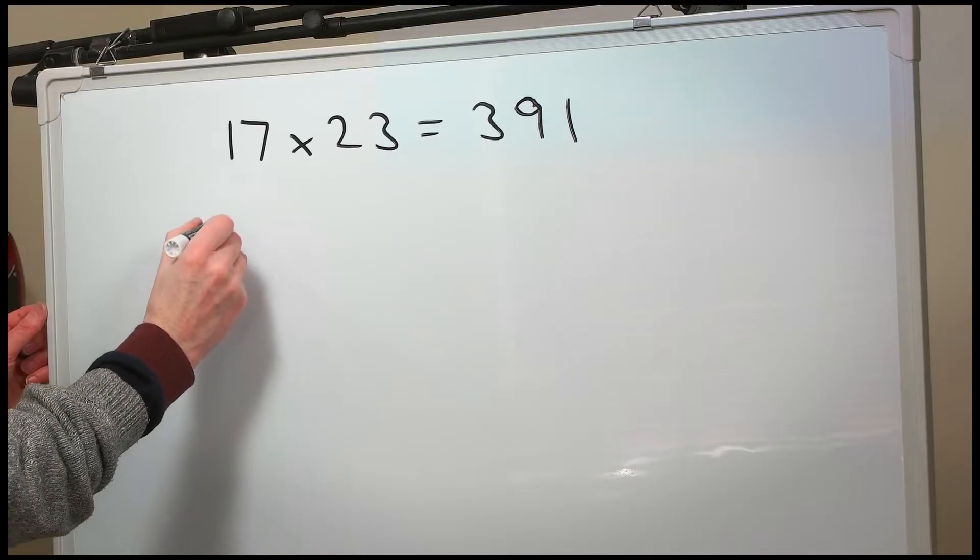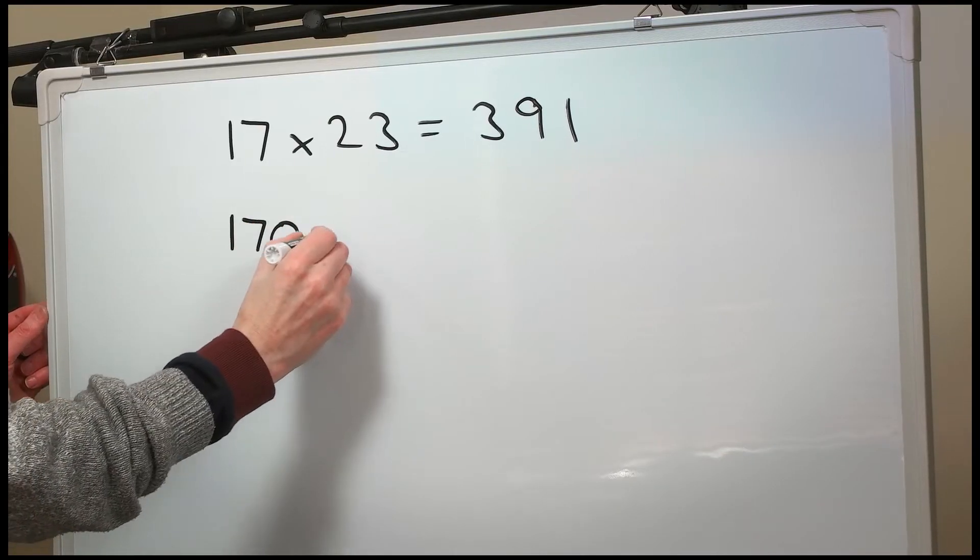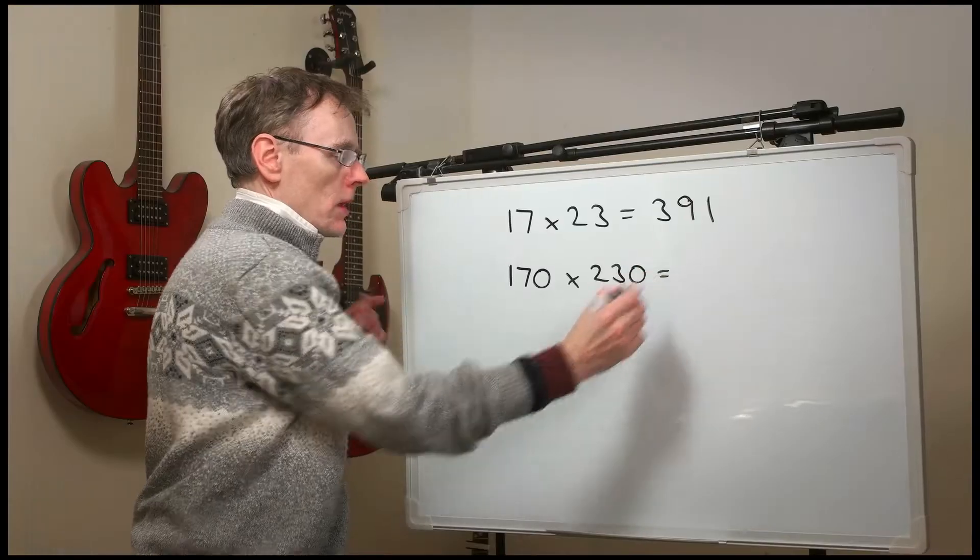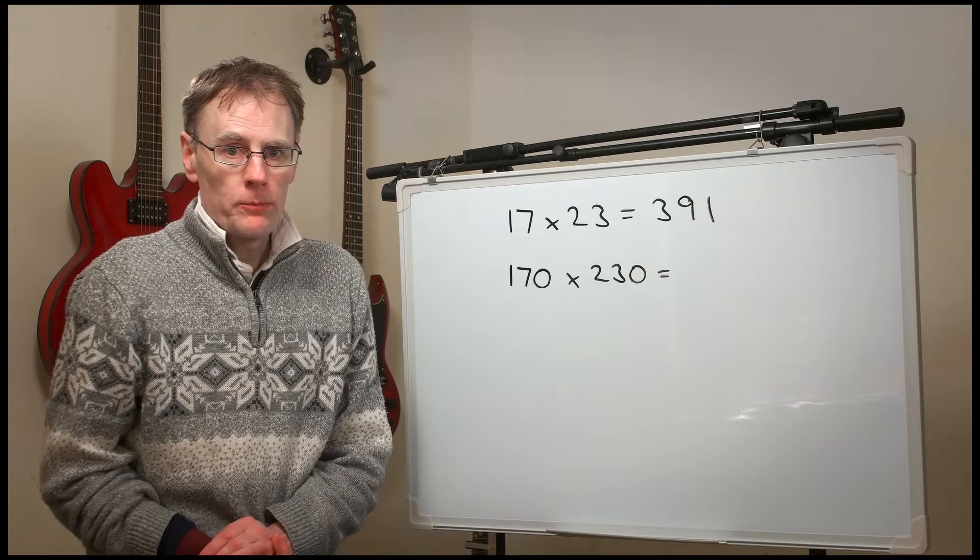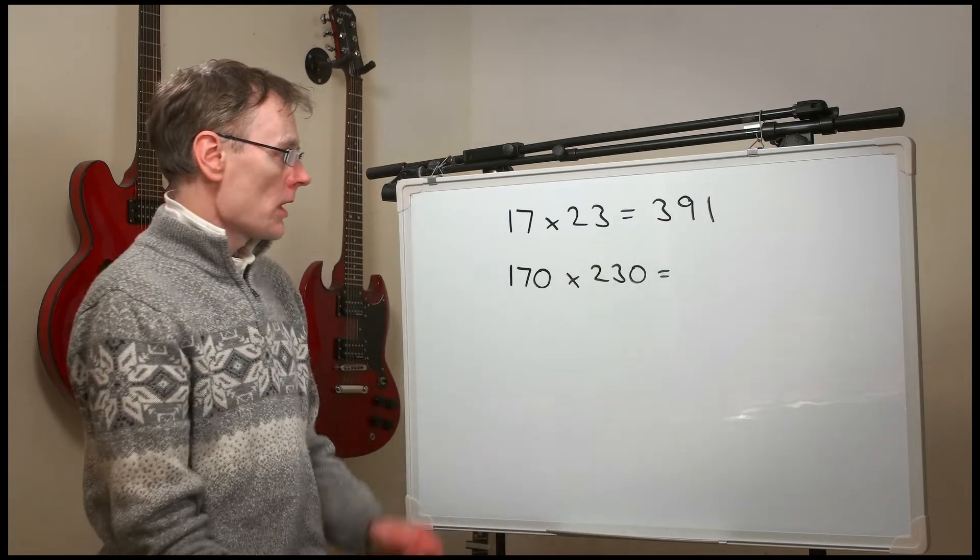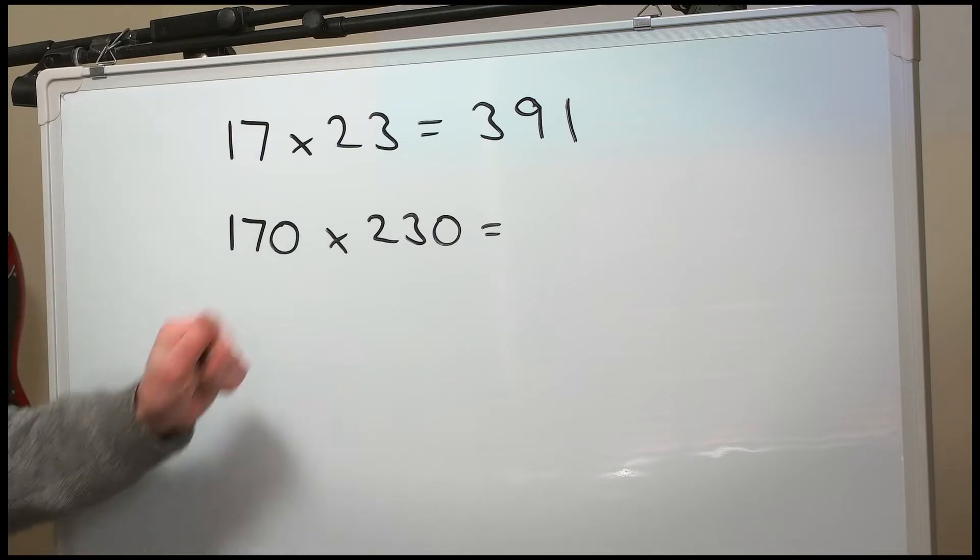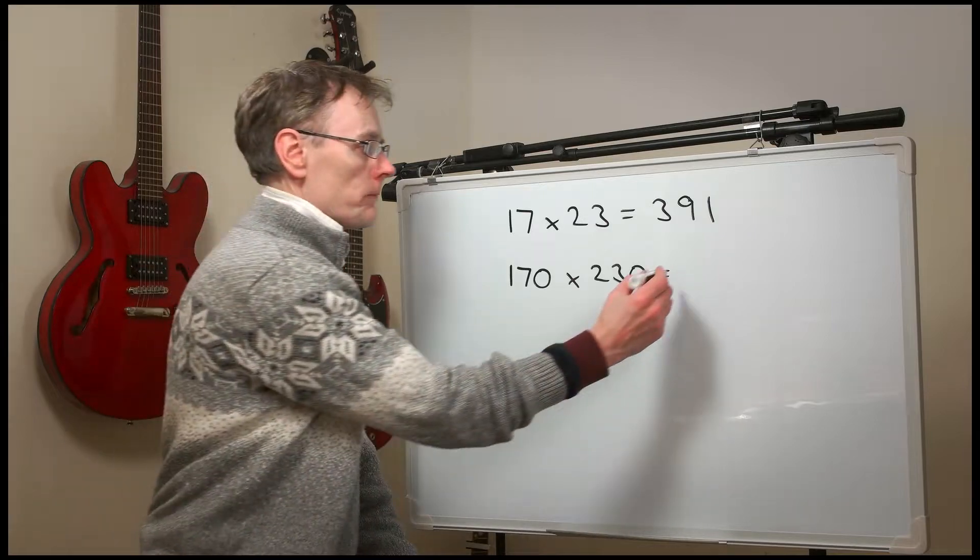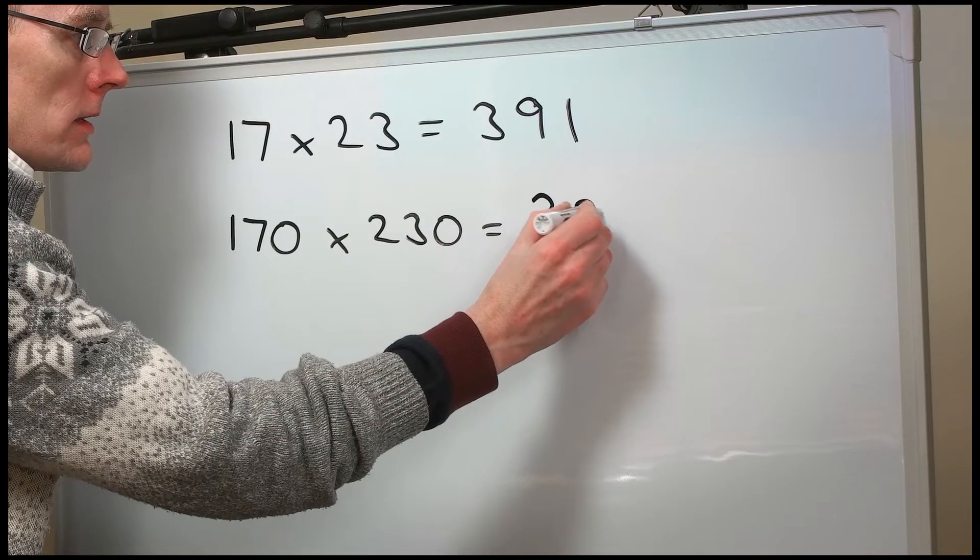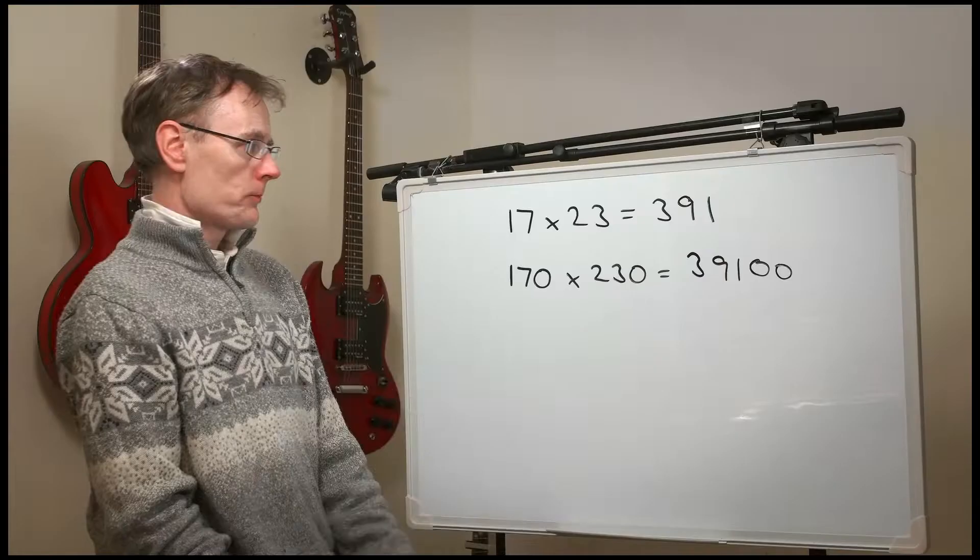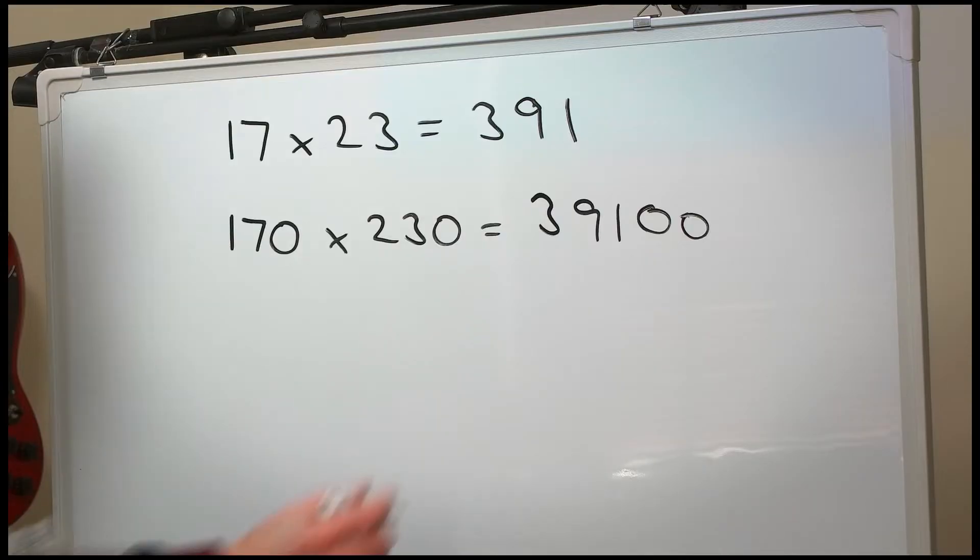What about 170 times 230? Well, the answer is going to be bigger. How many times bigger than 391? This has made it 10 times bigger, and this has made it another 10 times bigger. So the answer is going to be 10 times 10 times bigger. That's 100 times bigger. 39,100.